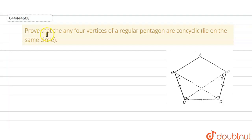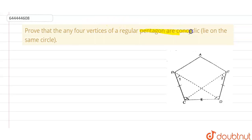The question here is: prove that any four vertices of a regular pentagon are concyclic. This is what I have to prove — that any four vertices of a regular pentagon are concyclic, meaning that they lie on the same circle.